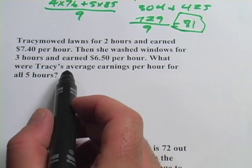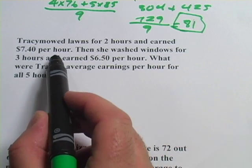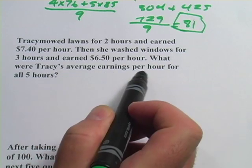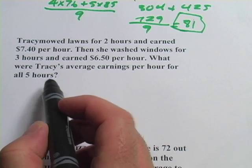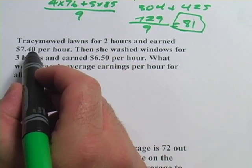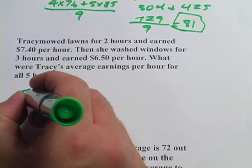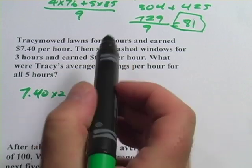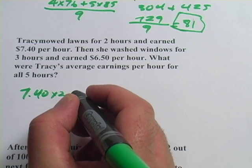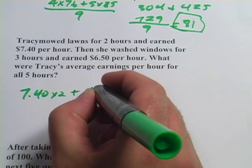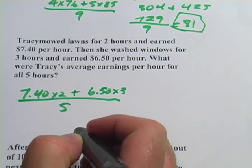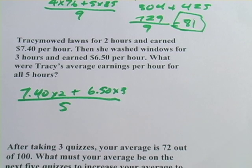Let's look at another one. This one says: Tracy mowed lawns for two hours and earned $7.40 per hour. Then she washed windows for three hours and earned $6.50 per hour. What were Tracy's average earnings per hour for all five hours? We're looking for the average money she earned per hour. The two chunks are two hours at 7.40 — I'm going to write 7.40 times 2 — and three hours at 6.50, so plus 6.50 times 3. That all goes over 5.